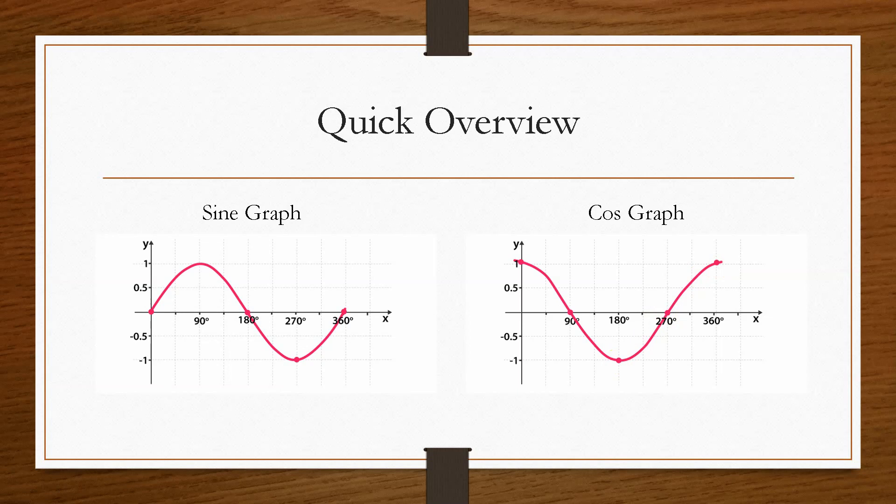Now for one revolution, the value of y must be the same for the starting position and the end position. So sine starts at 0, it ends at 0. Cos starts at 1, it ends at 1.